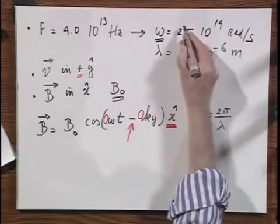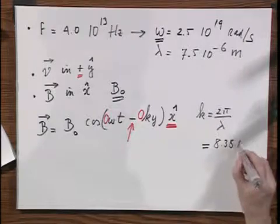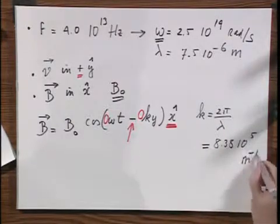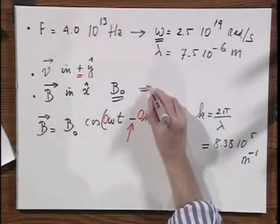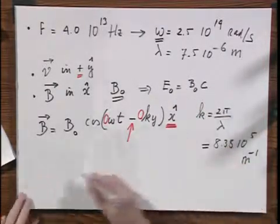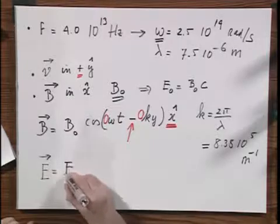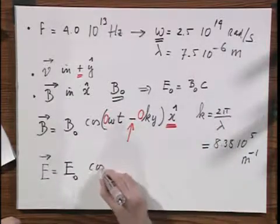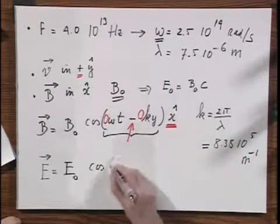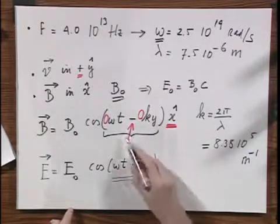Well, omega you already know. If you are interested in K by any chance, then I believe that is 8.38 times 10 to the 5 meters minus 1. Now since you know B zero, you also know E zero, because E zero equals B zero times C. So if we write down now the E vector as a function of X, Y, Z and T, then we would get E zero here, which you know. And then I get exactly this same argument, omega T minus K Y. Why? Because I mentioned earlier that E and B are always, at any moment in time, exactly in phase. And that's only possible if this is identical to that.